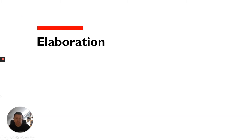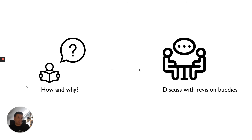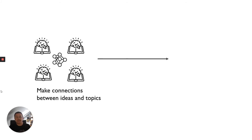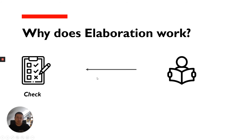Some of you will like to talk about your work, and that's completely fine. In sixth form, you can use the breakout rooms or the cafe downstairs. This is elaboration — thinking about how and why, finding the answers to your revision questions and discussing them with your study or revision buddies. This definitely deepens your understanding and learning, helping you make connections between ideas, explain similarities and differences, and evaluate your work, which is a higher-level learning skill. Elaboration works because you're checking your understanding and accuracy of your explanations against the original material.